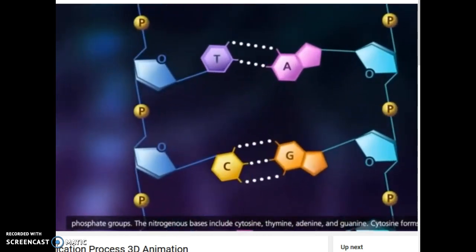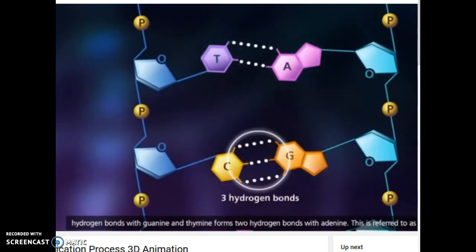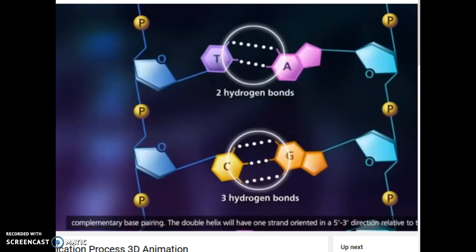The nitrogenous bases include cytosine, thymine, adenine, and guanine. Cytosine forms three hydrogen bonds with guanine, and thymine forms two hydrogen bonds with adenine. This is referred to as complementary base pairing.